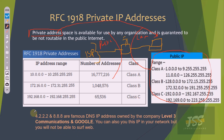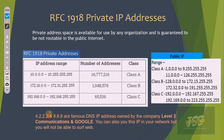For example, 4.2.2.2 is a public IP. Then we have 8.8.8.8, which is also a public IP. The IP 4.2.2.2 is a famous DNS server owned by Level 3 Communications, and 8.8.8.8 is owned by Google.